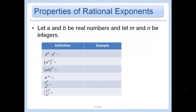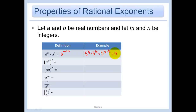Properties of rational exponents. Let a and b be real numbers and let m and n be integers. a to the m times a to the n is a to the m plus n. Nothing changes here. So an example: if I have the same bases, 5 to the 1 half times 5 to the 3 halves — same bases, add the exponents. 1 half plus 3 halves is 4 halves, in other words 2.